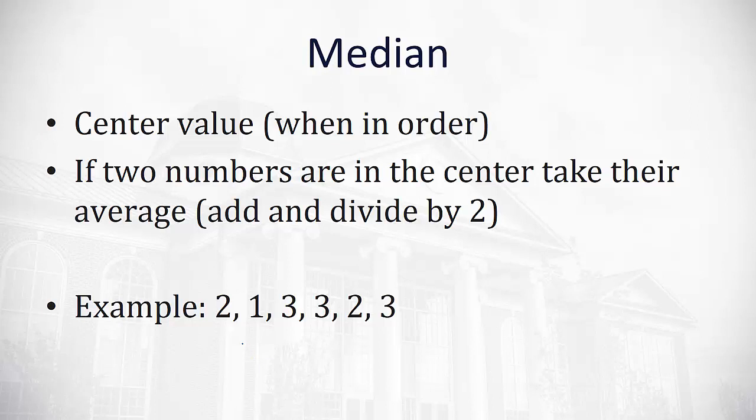So in our example, 2, 1, 3, 3, 2, 3, we first have to put them in order: 1, 2, 2, and then 3, 3, 3. And then once the data is in order, we look for the center. In this case, there's two numbers in the center. So what we're going to have to do is we'll add them together and then divide by 2. That's going to give us 5 halves or 2.5 for our median value.